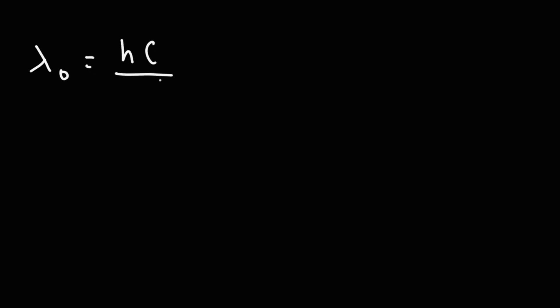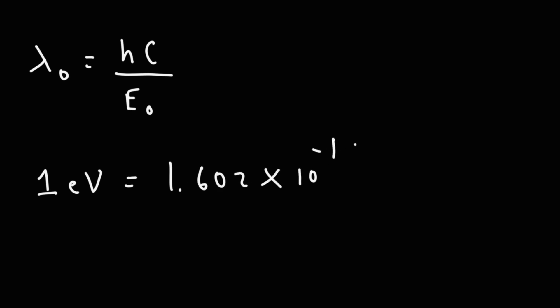Sometimes you may need to calculate the maximum wavelength needed to free an electron from a metal. That max wavelength is equal to Planck's constant times the speed of light divided by the threshold energy or work function. Note that the work function may be given in electron volts rather than joules — one electron volt is 1.602 times 10 to the negative 19 joules, so use that conversion factor to convert to joules.